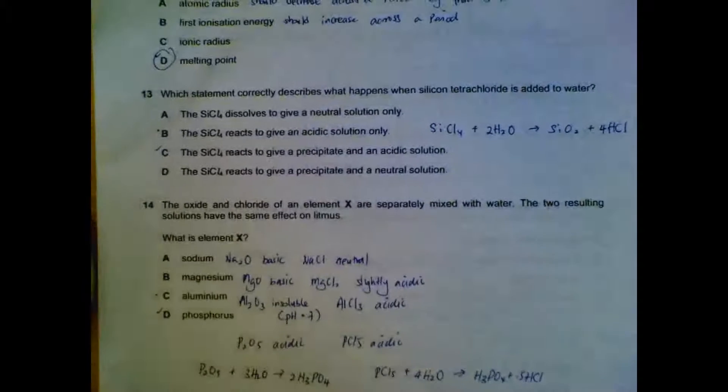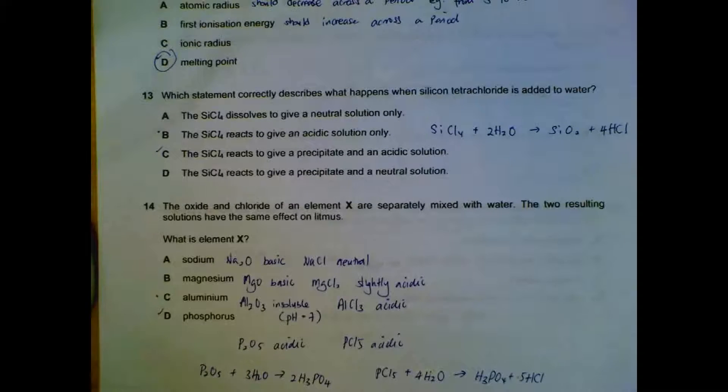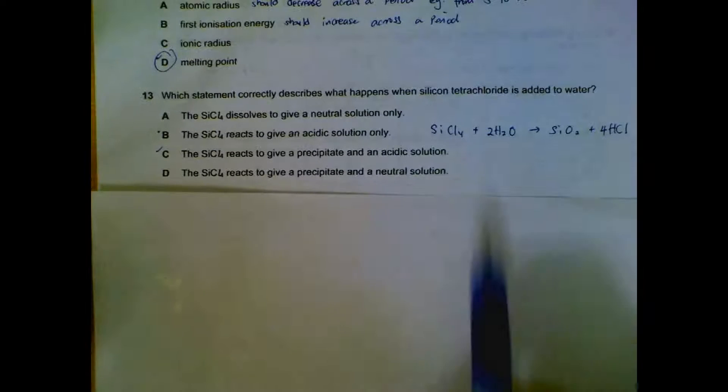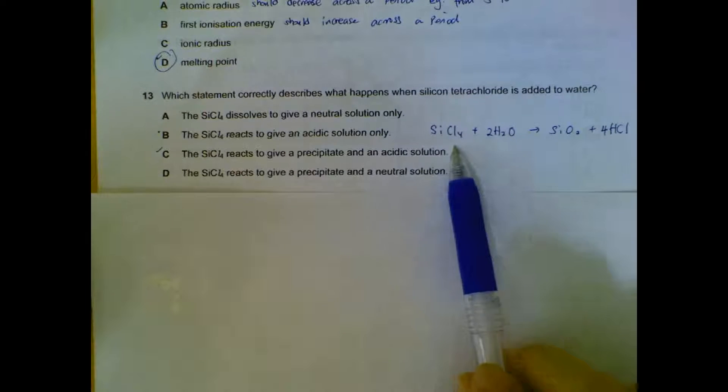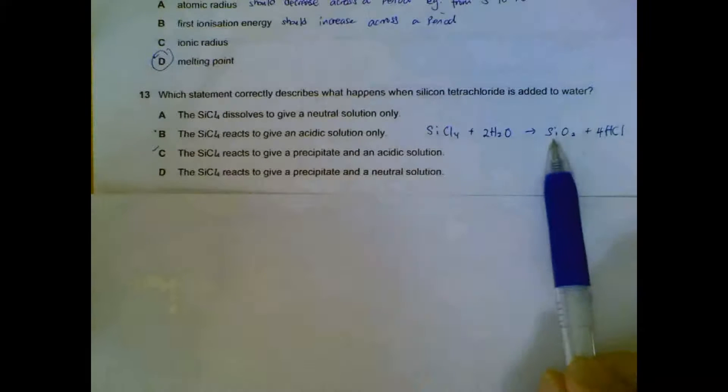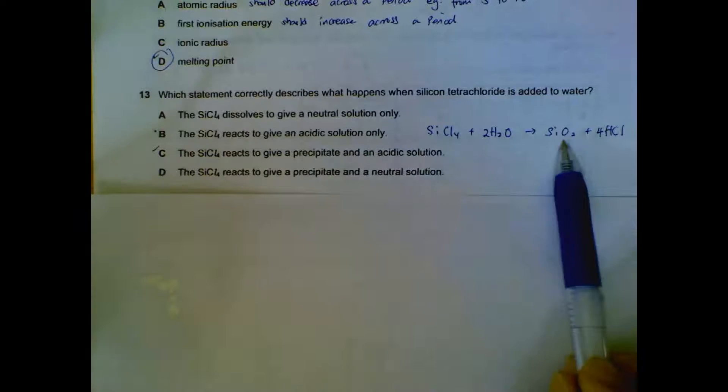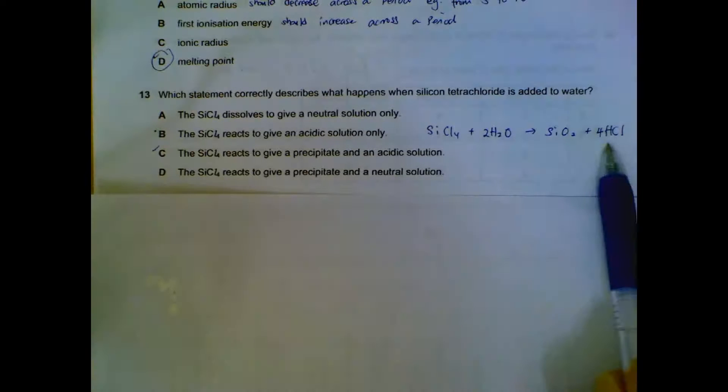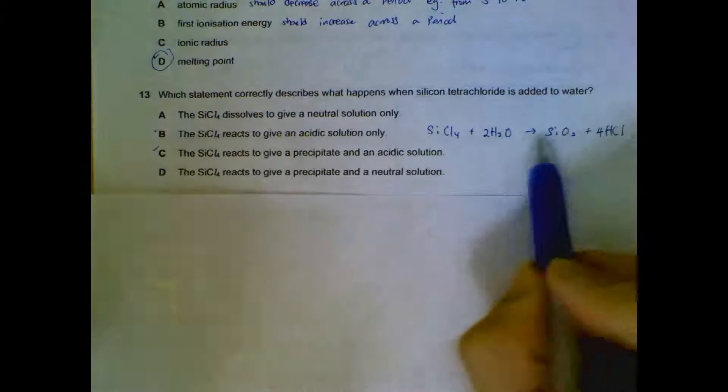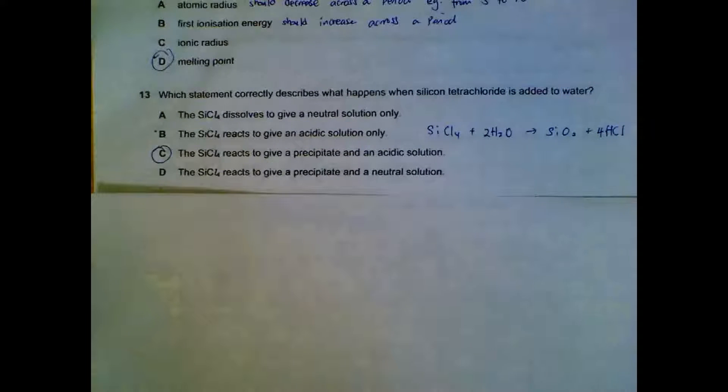Question 13. What happens when we have SiCl4 added to water? When silicon tetrachloride is added to water, we actually get silicon dioxide and hydrogen chloride. This is your precipitate, the structure of sand, and then this is your acid. This causes the acidic solution, H+ and Cl-. So we have a precipitate and we have acidic solution. Answer is C.